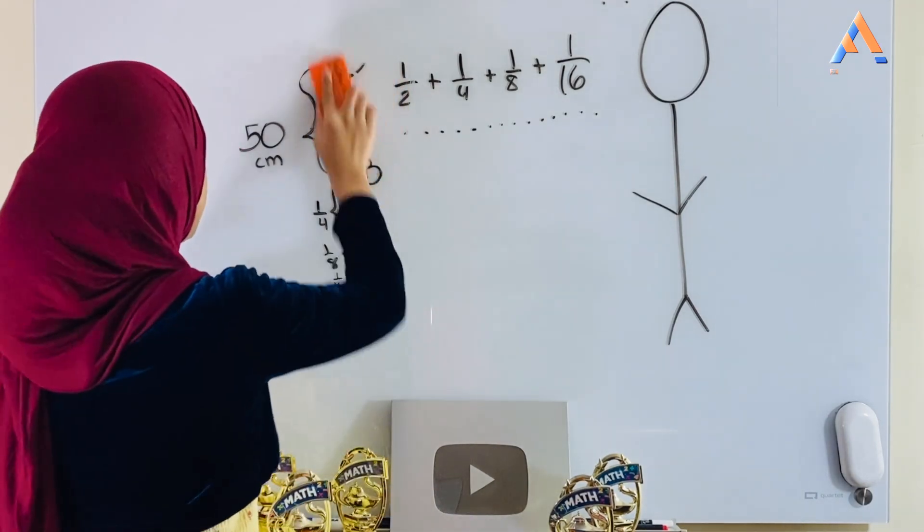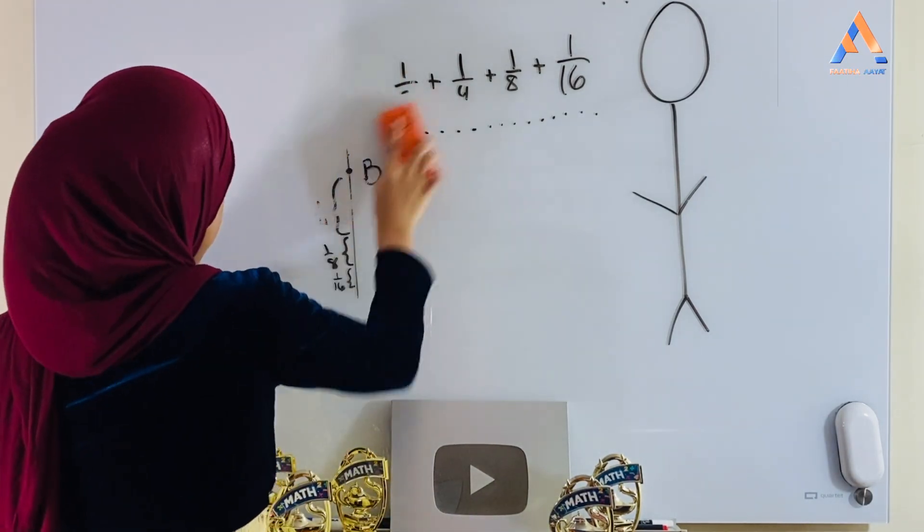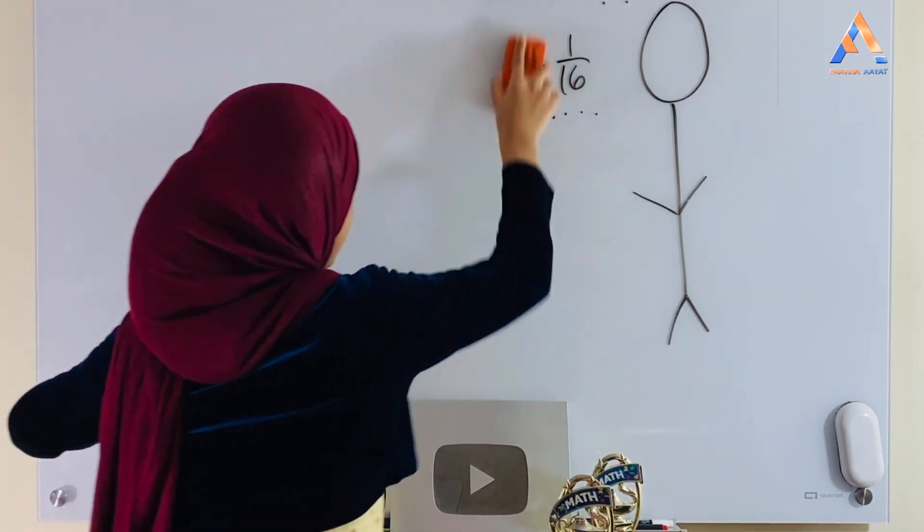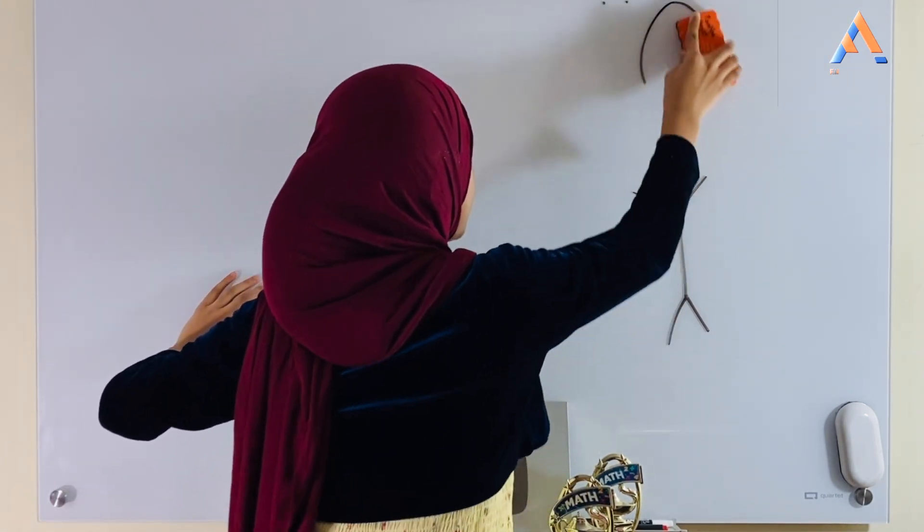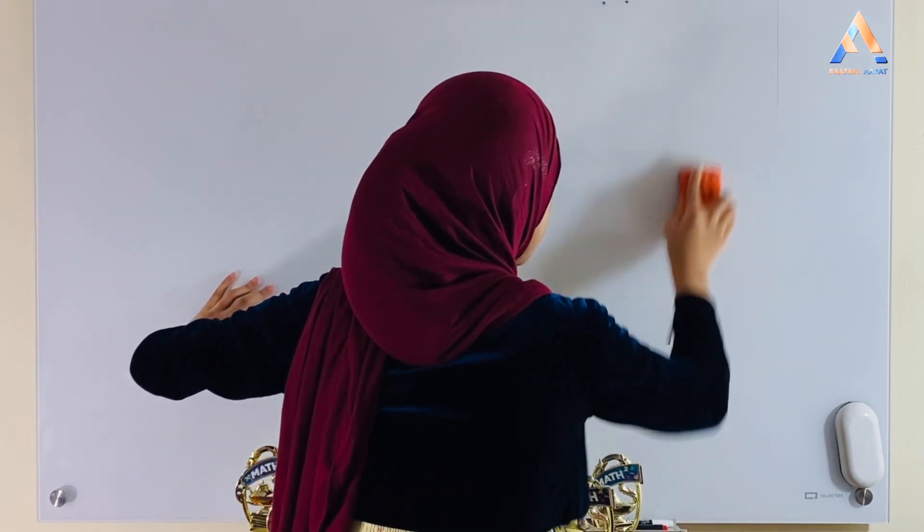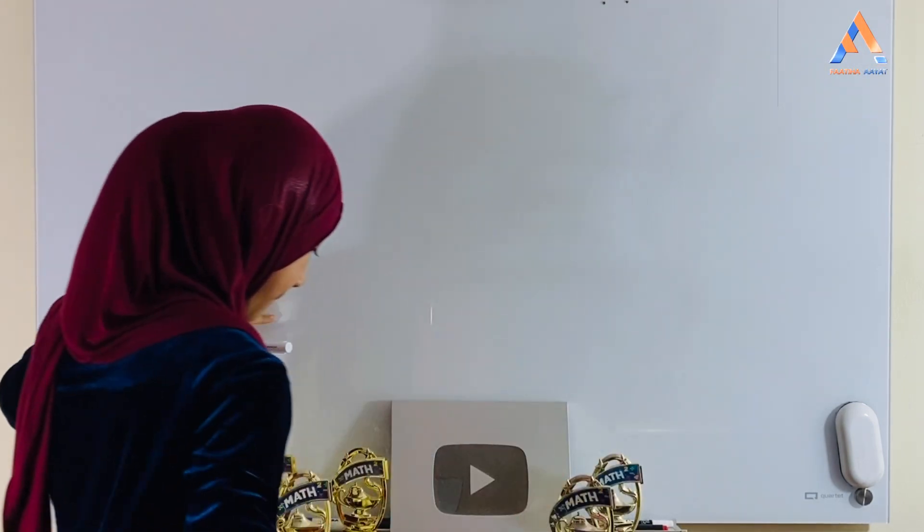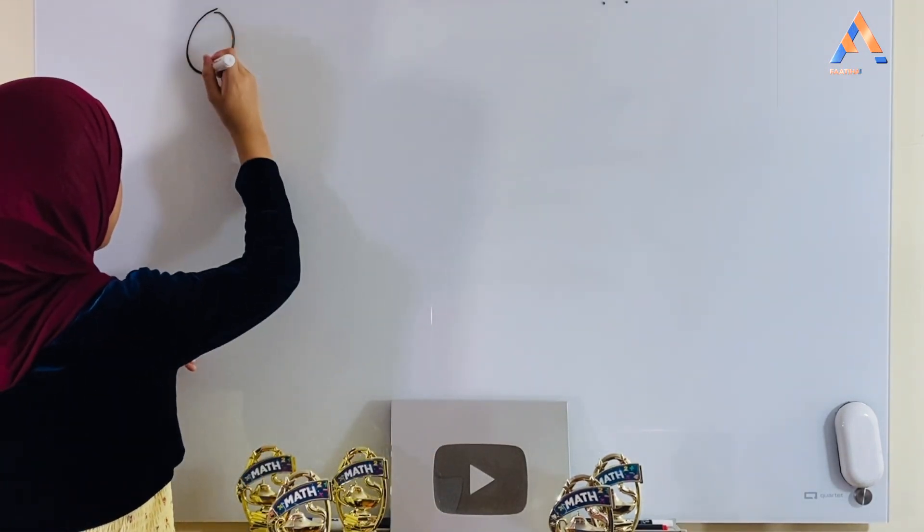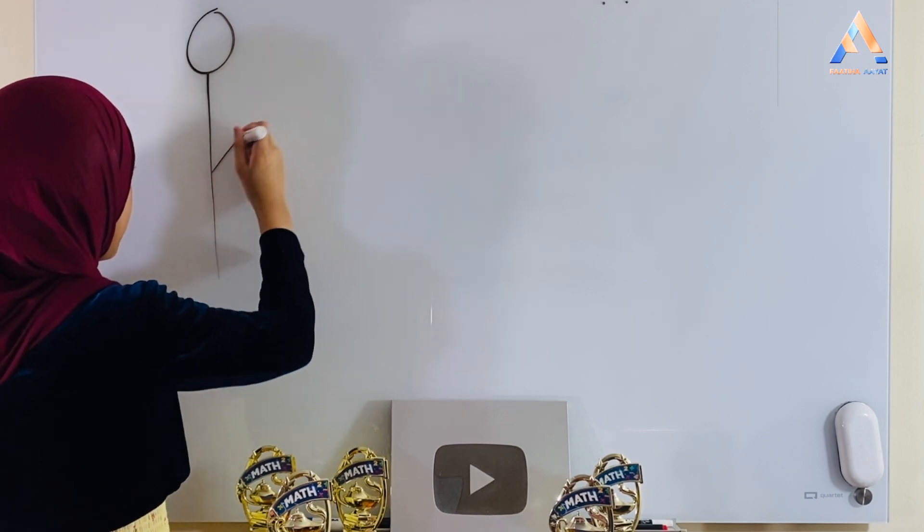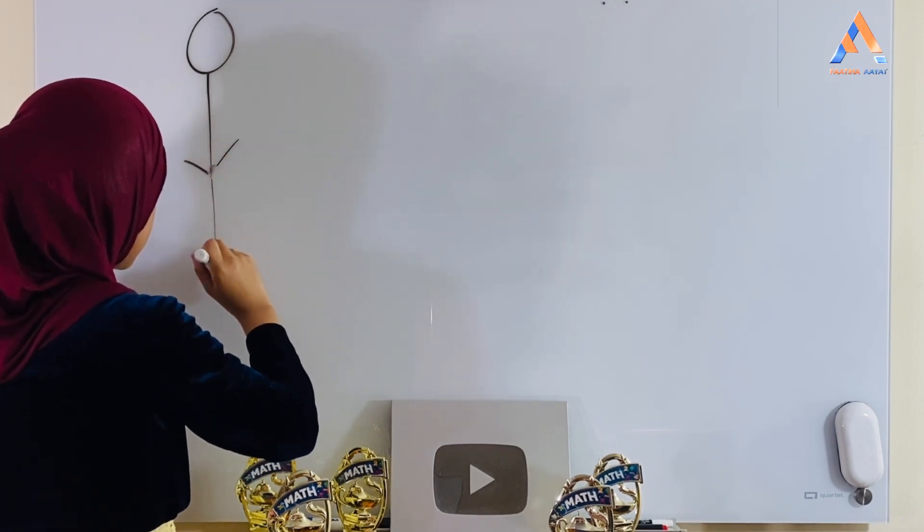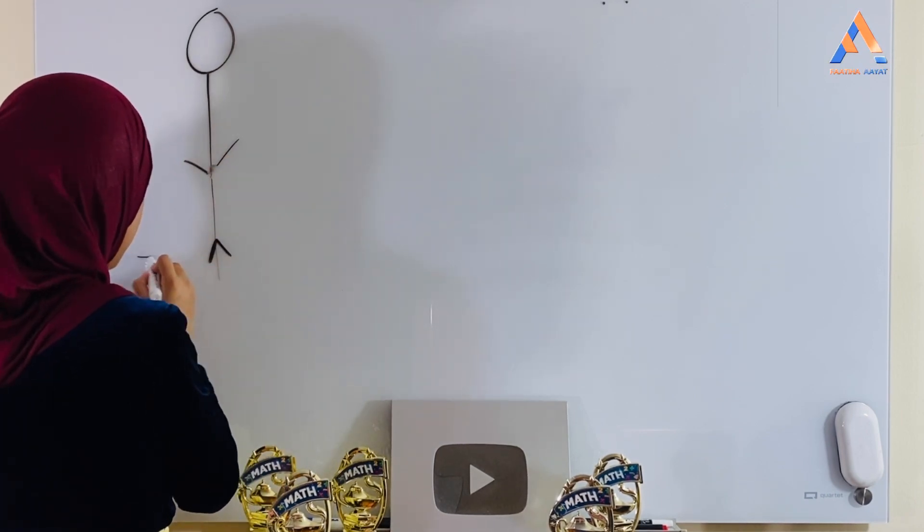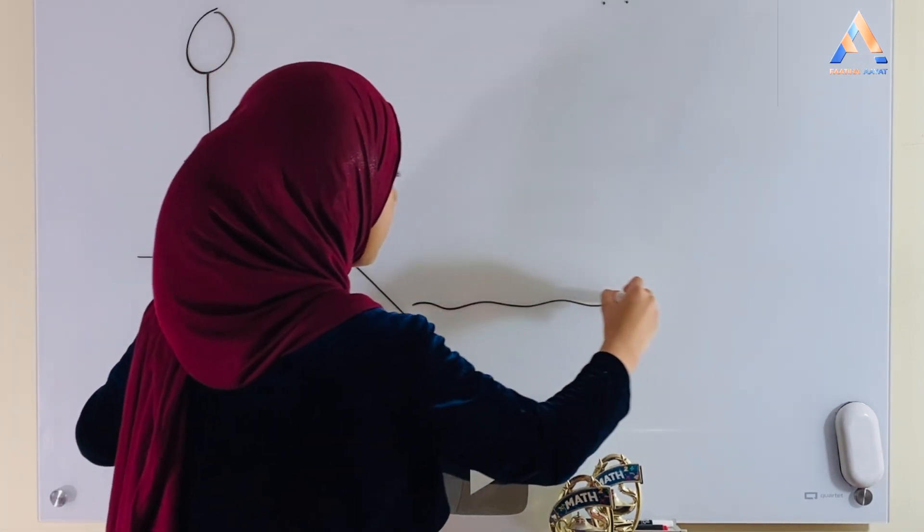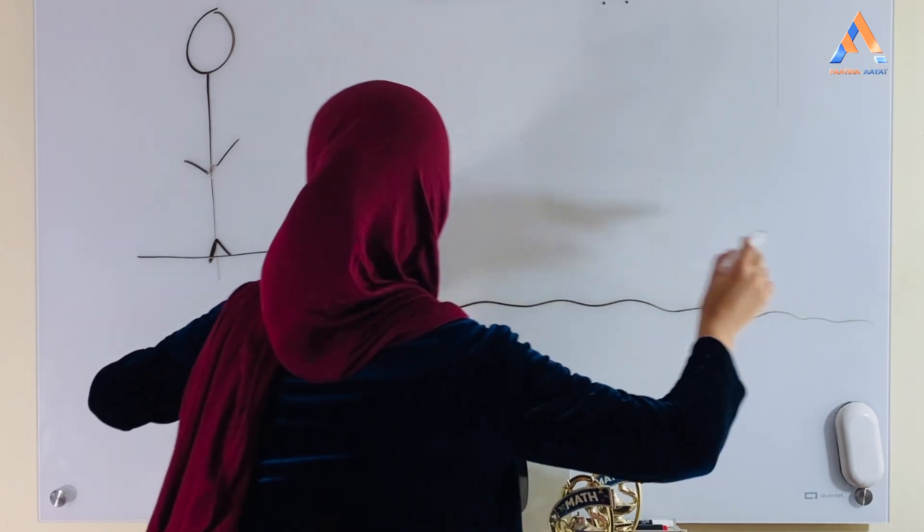My third example wouldn't be with this problem. Let's say that the same person went on vacation or somewhere. And here, let me erase this. And that person is standing, let's see right here, and that person is standing on a cliff. And right here would be the ocean.